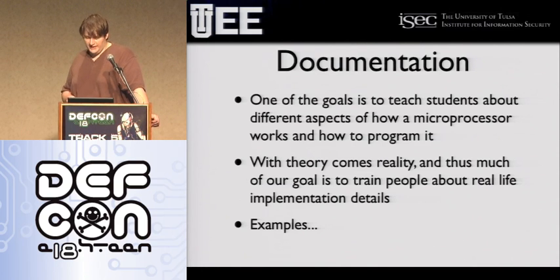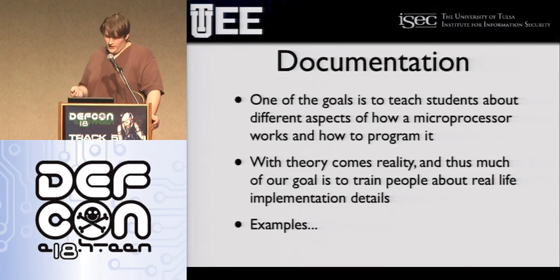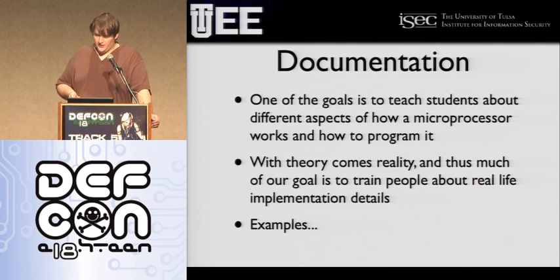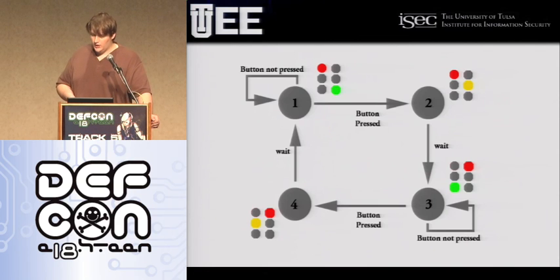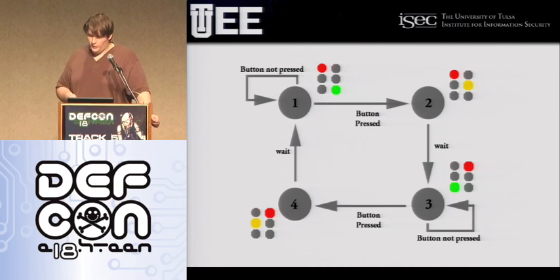We have a bunch of documentation online about the kit. We are not releasing a lot of example code specifically because we are teaching a course — if we release a lot of example code then students can just copy it, change a few things, and turn it in. But this is supposed to be simple and easy to use and we have a lot of helpful information online. This is an example of the documentation: a state machine diagram for one of the accessory boards we have built, which simply emulates a traffic light. It's just four states and the code is incredibly simple, but building these diagrams is one of the things we're doing.